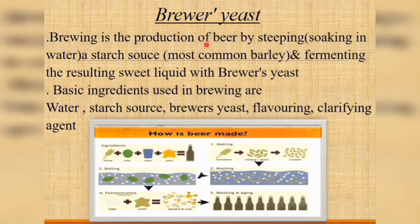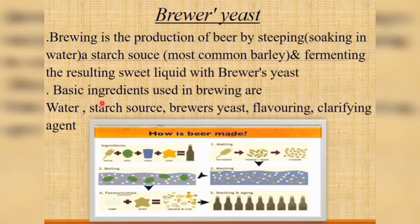Brewer's yeast: brewing is the production of beer by steeping a starch source — most commonly barley — in water and fermenting the resulting sweet liquid with brewer's yeast. Basic ingredients used in brewing are water, starch source, brewer's yeast, and flavoring.